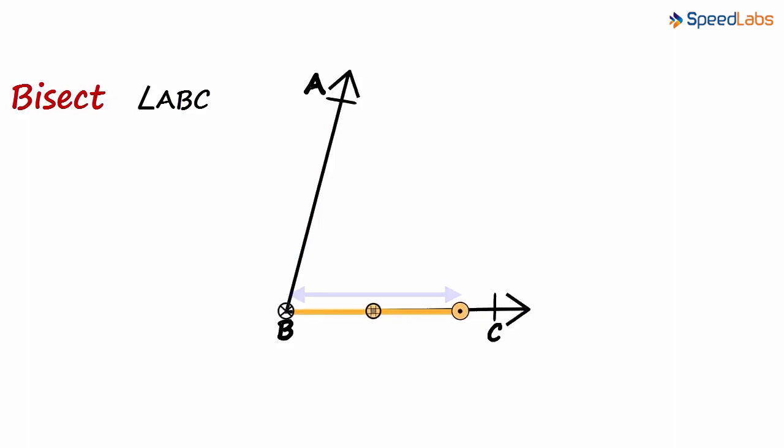Remember, this width can be of any length. With this width, we need to draw an arc across each leg of the angle. An arc across the first and one across the second.